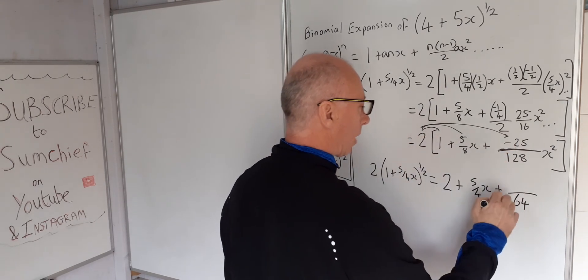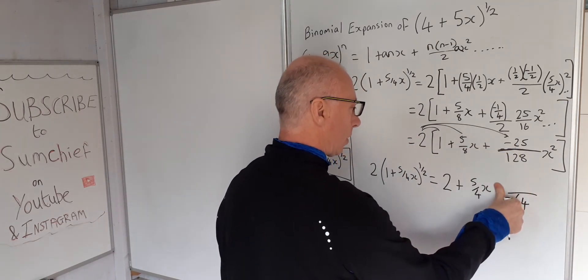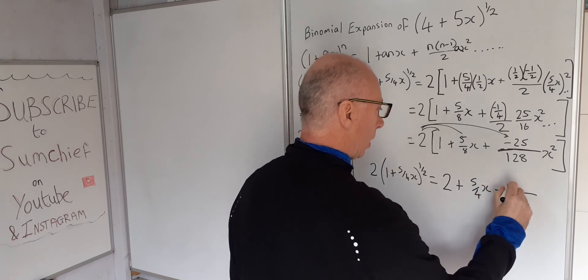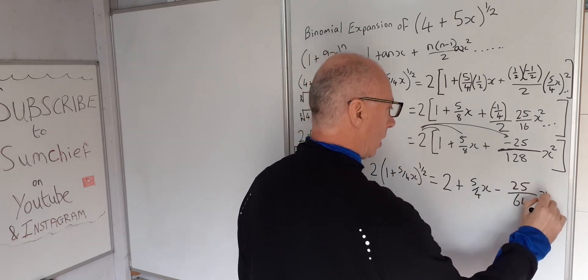2 times minus 25, we've taken care of the 2, so we can now just put the minus 25 on the top, so this sign can change, that's minus 25 x squared.